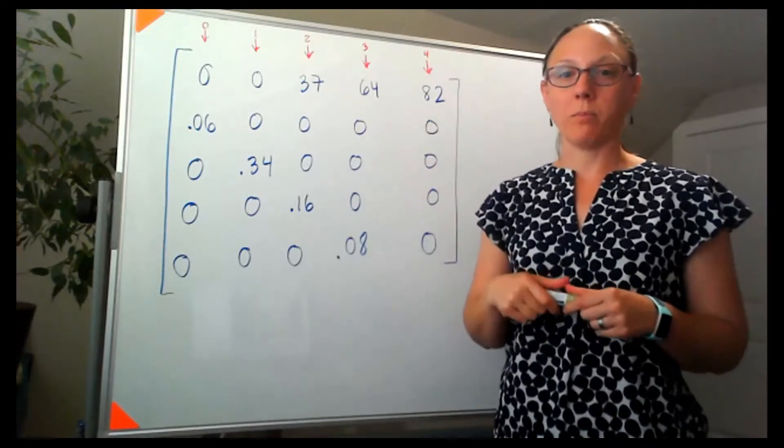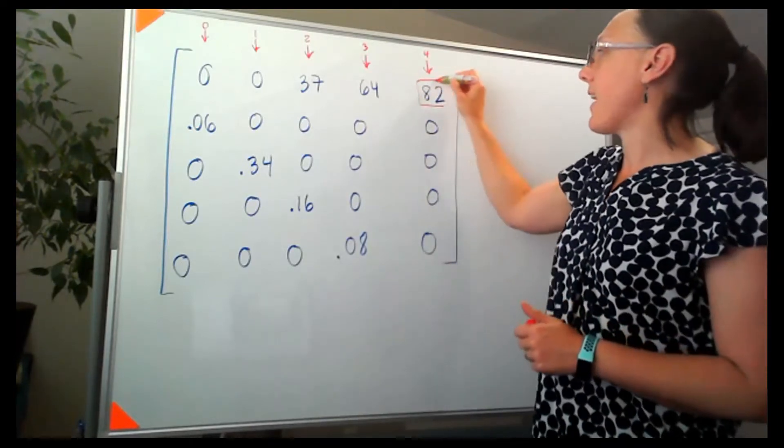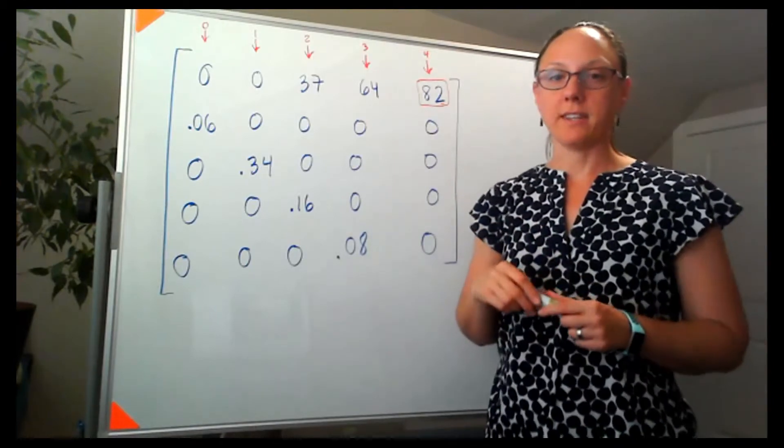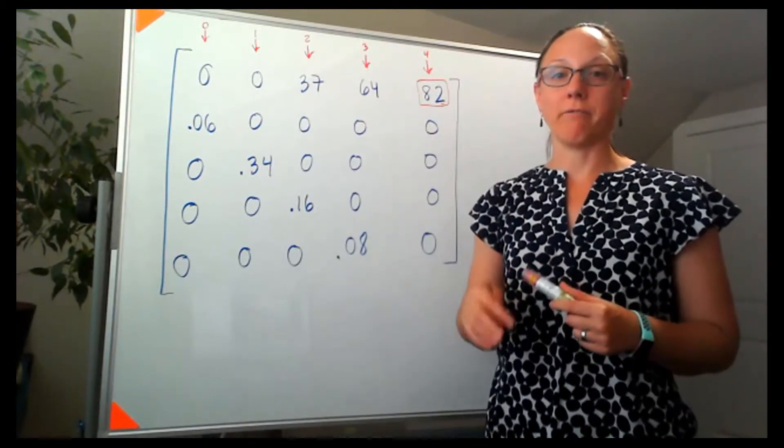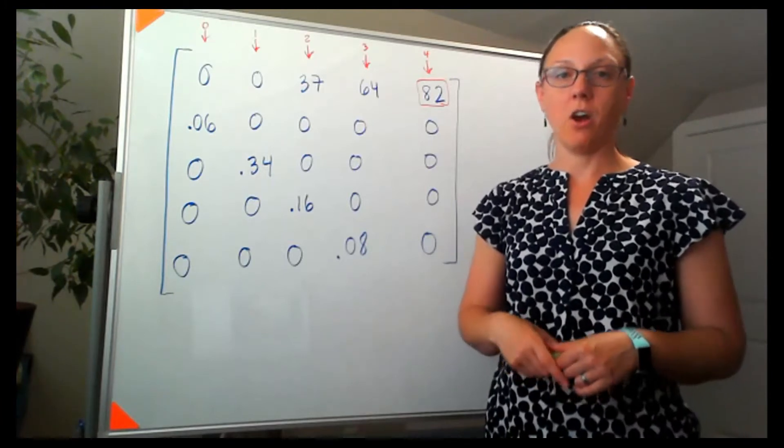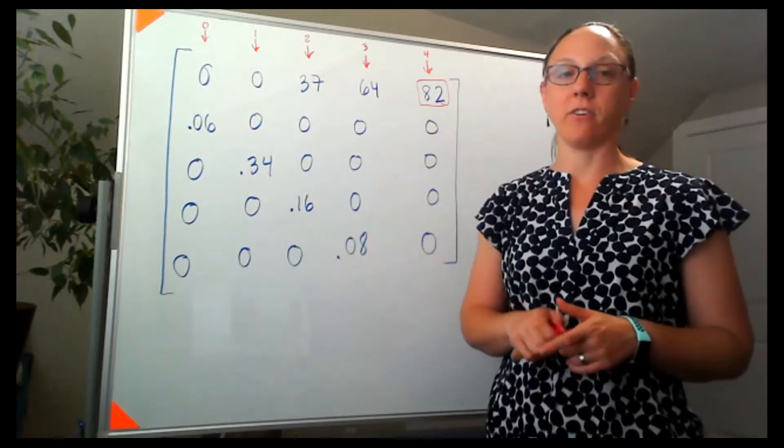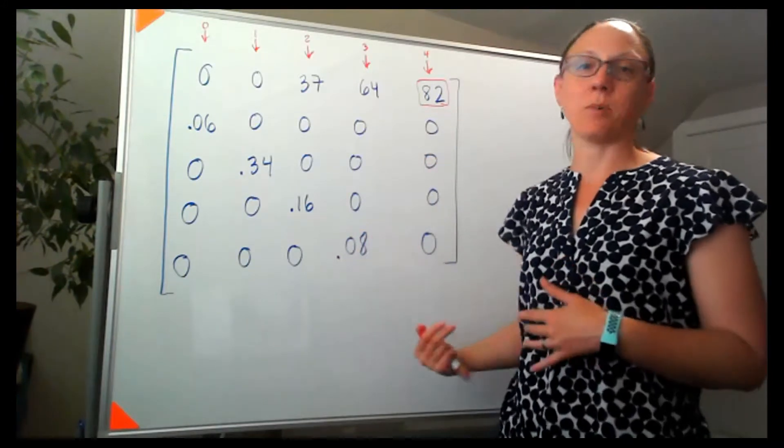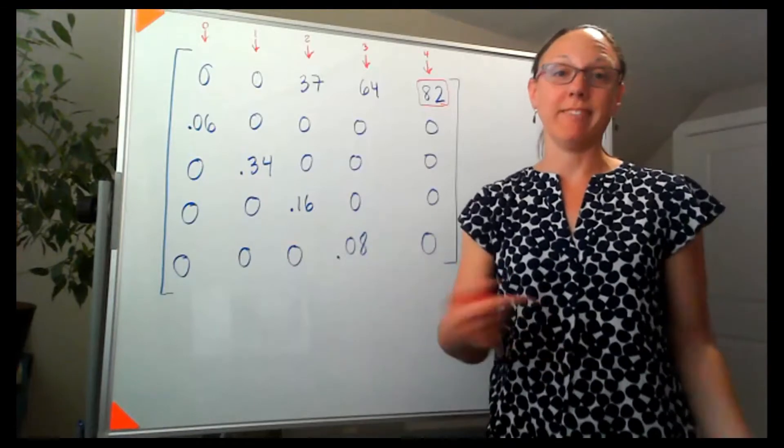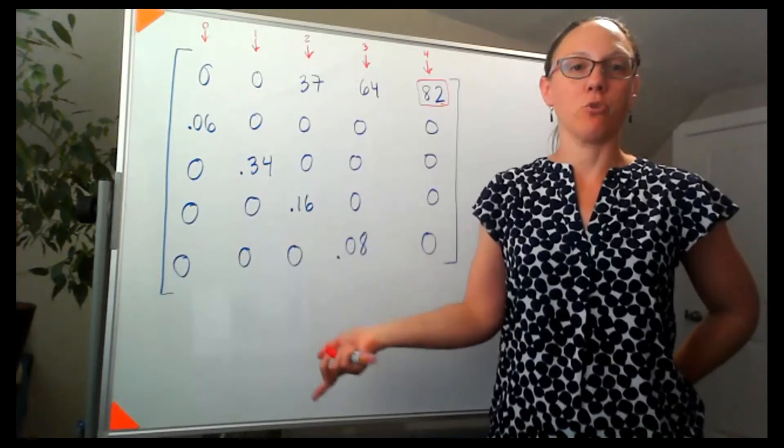Since that top row represents the average number of female offspring, this is the highest number, which means that my age class four females produce the highest number of female offspring. On average, 82 female offspring per breeding cycle. And this particular model I found in last year's textbook, in our old textbook, and this is modeling a population of trout.